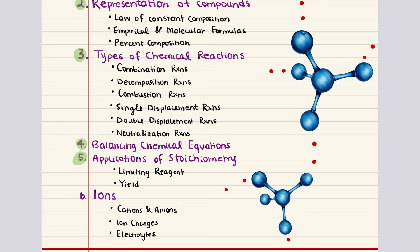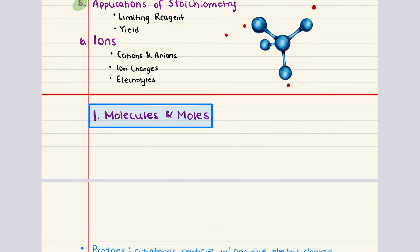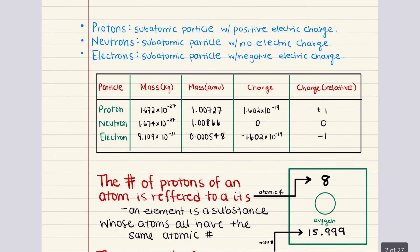With that introduction, let's move into objective one — molecules and moles — and begin with a quick refresher on atomic structure. An atom is the smallest identifiable unit of an element. It is a neutral particle made of negatively charged electrons moving around a positively charged nucleus.